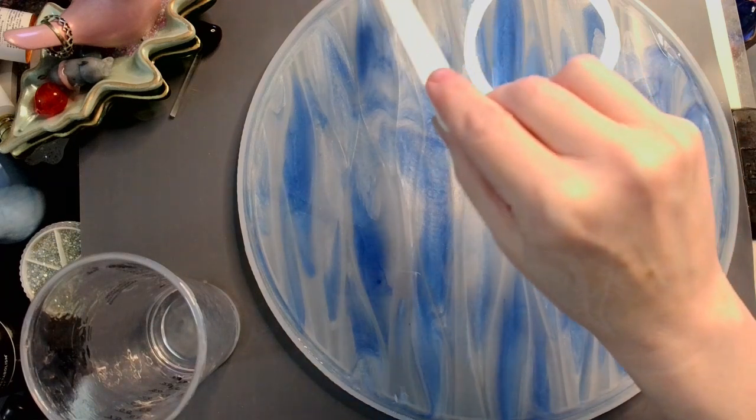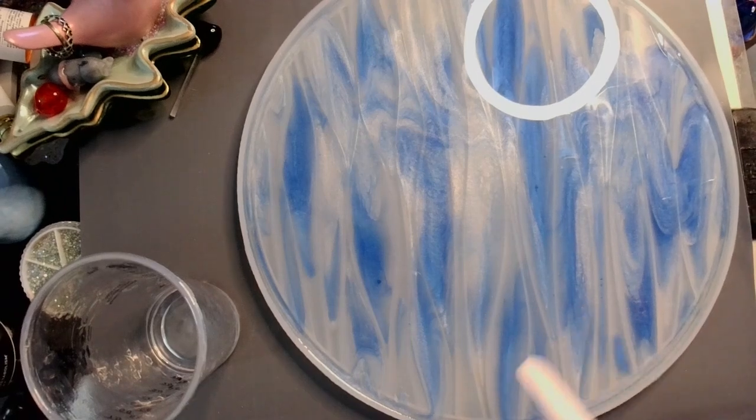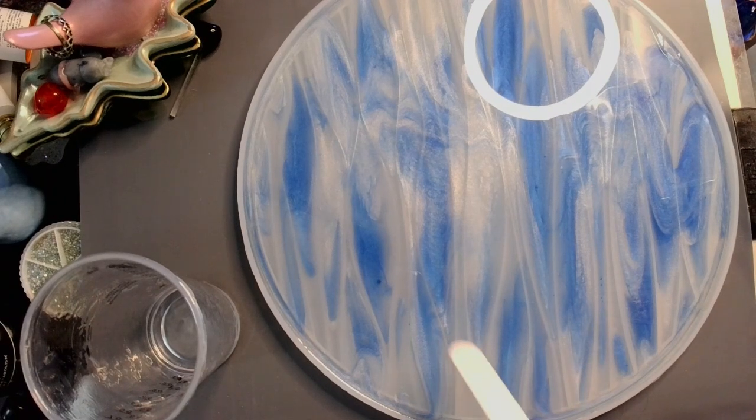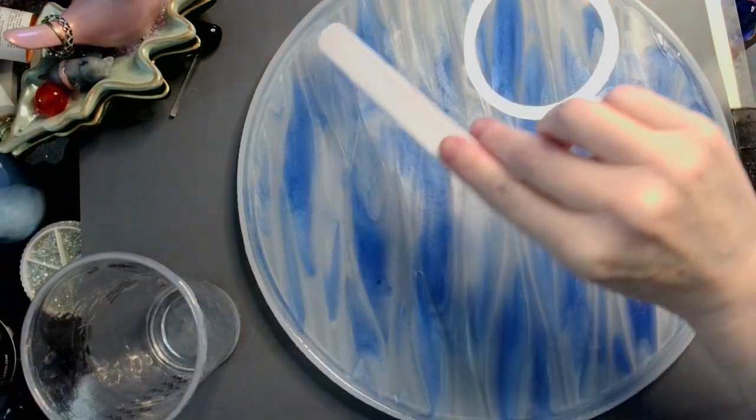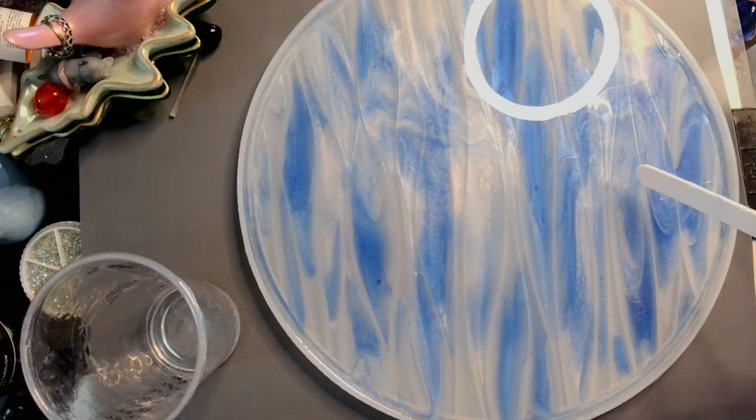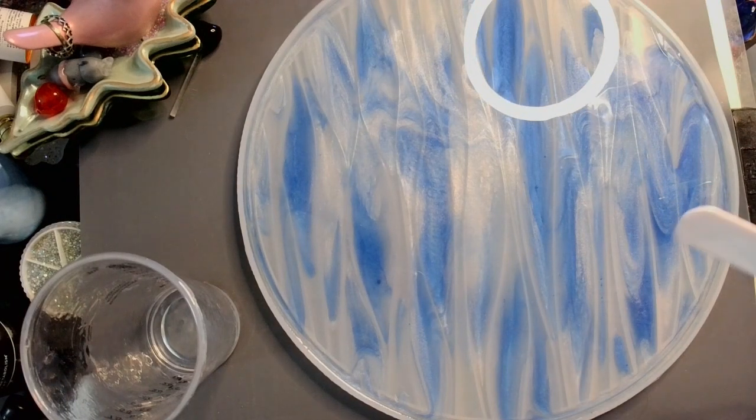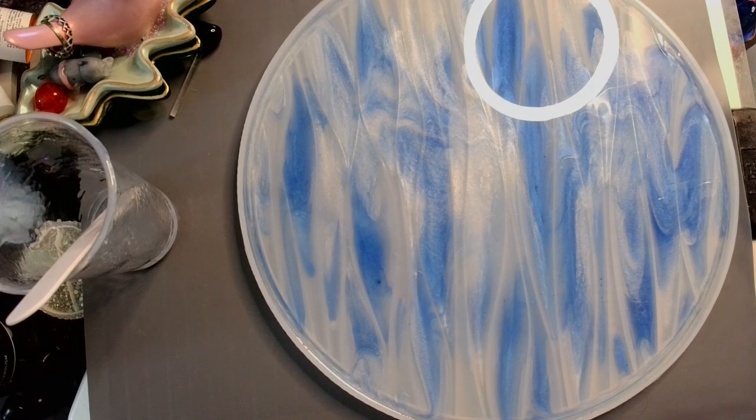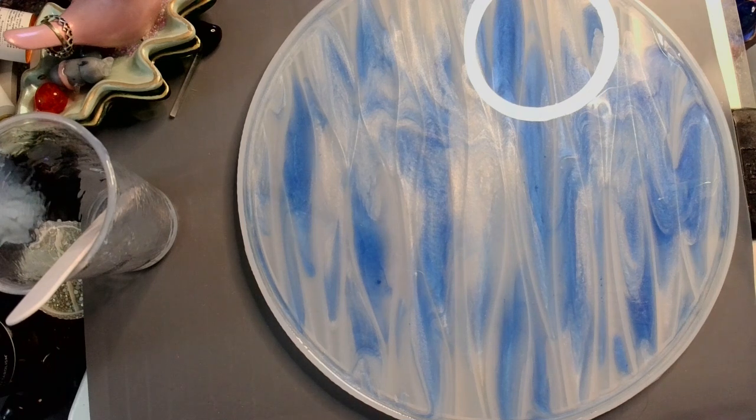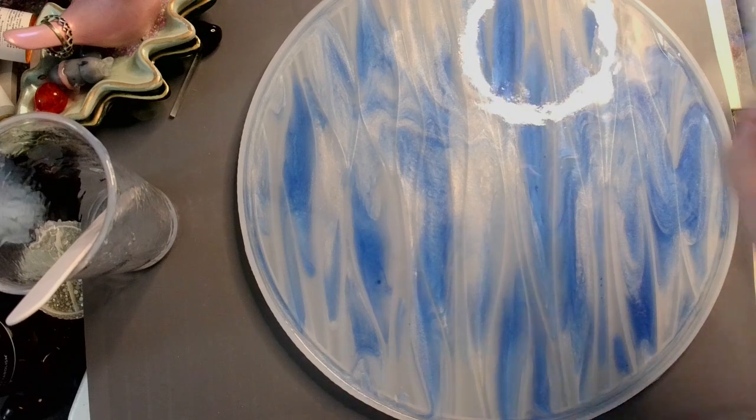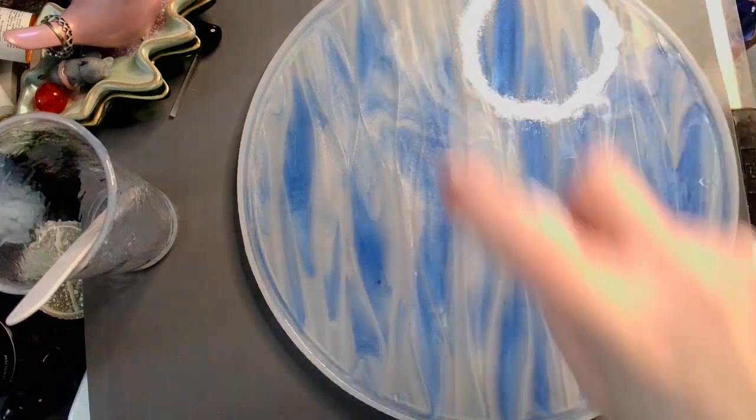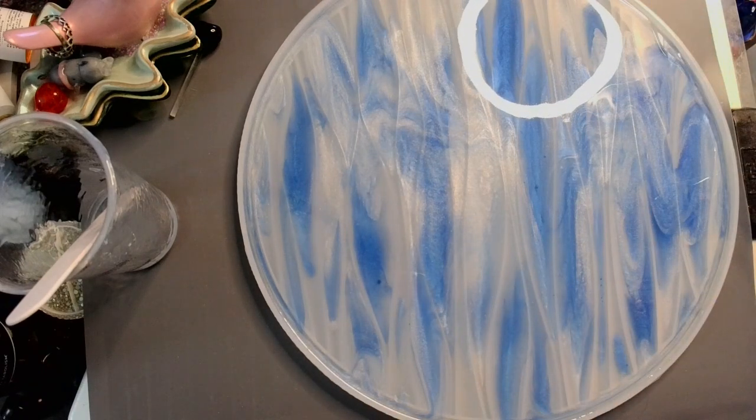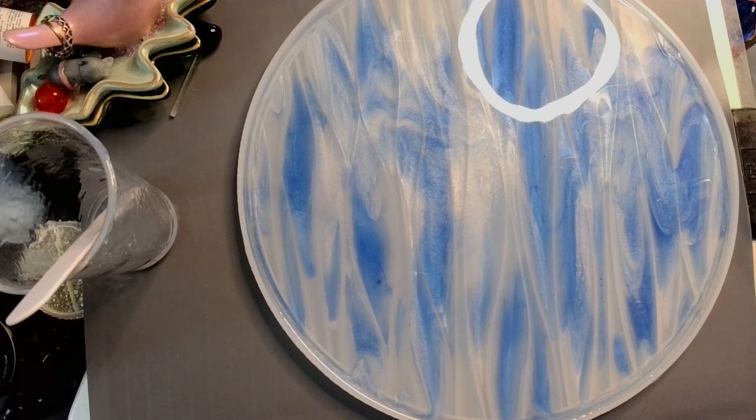Now we have our six ounces of clear over the top here. We are going to let that fill in all of its little blanks and then we will go over the top once everything is cured, because it's going to need a top coat most likely. If it doesn't I will be shocked and amazed. Let me spray with a little bit of alcohol to get out any surface bubbles. See you soon.